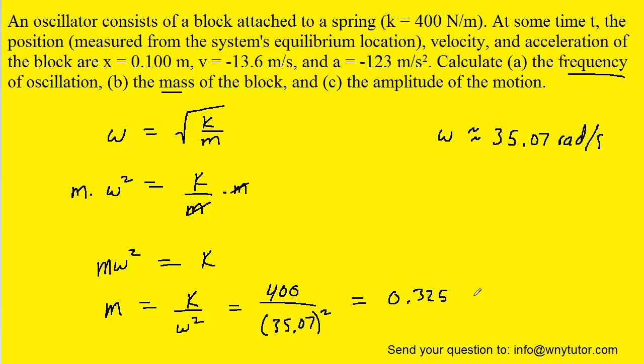We can use the value for omega that we calculated earlier, as well as the given spring constant of 400 newtons per meter to calculate the mass. And when we do that, we get a value of 0.325 kilograms. So that would serve as the mass of the block.